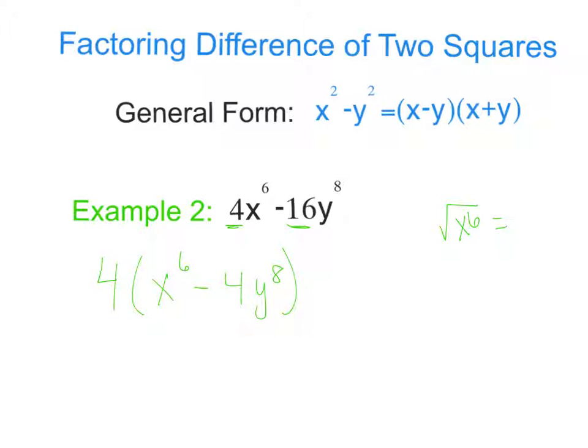So we're thinking with exponents, we add when we multiply. So x cubed times x cubed would give us x to the 6th. So square root of x cubed times x cubed is just x cubed.